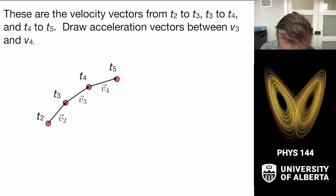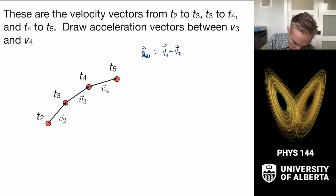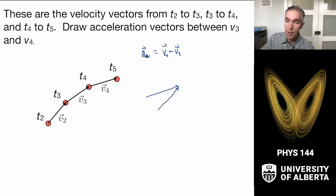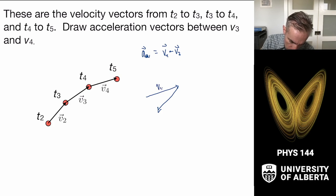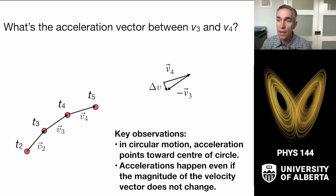To find the average acceleration vector between v3 and v4, we compute v4 minus v3. v4 is drawn as an arrow in one direction, and we take negative v3 by switching its direction. The acceleration vector then goes from the tail of one to the tip of the next, and that is the average acceleration vector.